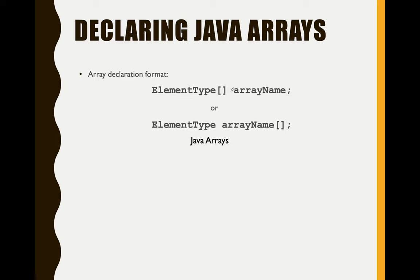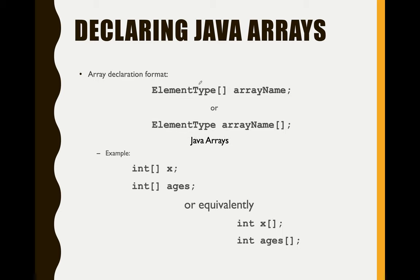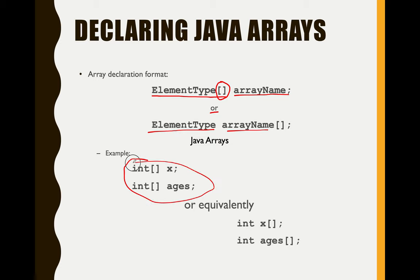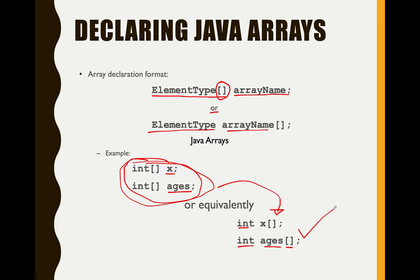How do you declare a Java array? You need to use this syntax or format. First, we have the element type — which is your data type — then the array name, and don't forget the bracket. For example: int bracket then x, or int bracket then aegis. This is the same as int x bracket, or int aegis bracket. Some Java IDEs prefer one style over the other — mostly they use the first format.